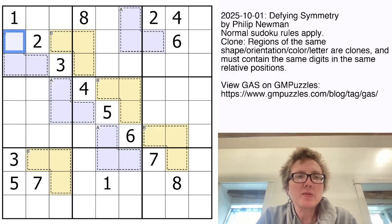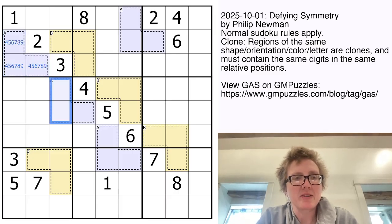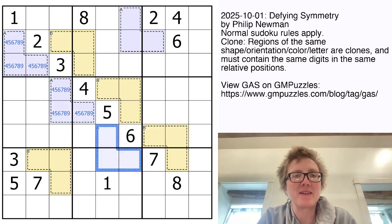So let's have a look. We know that the A cage doesn't have the digits one, two, or three anywhere in it, because those are all here, and the A cage is totally contained within that region. So I'm just going to pencil mark those as four, five, six, seven, eight, nine.